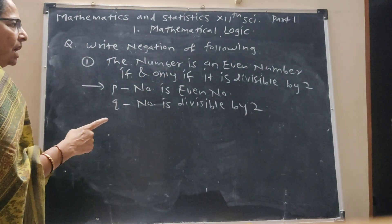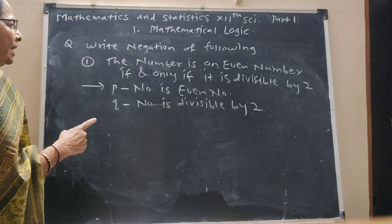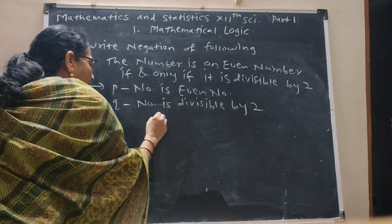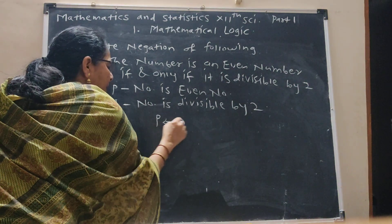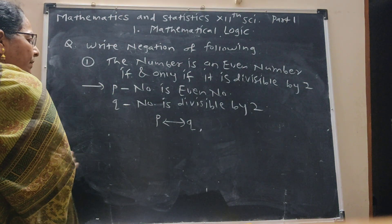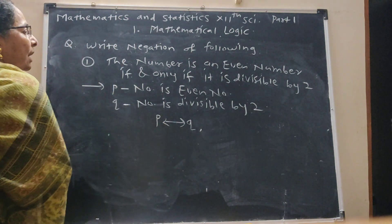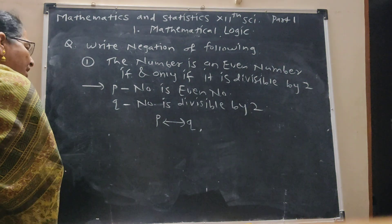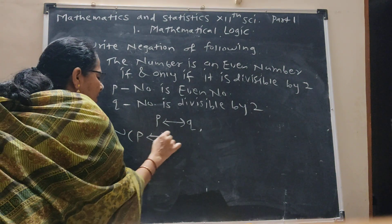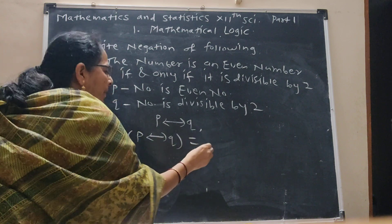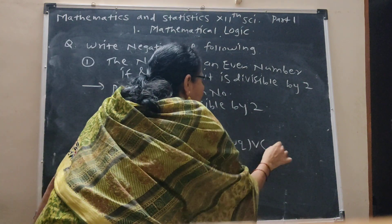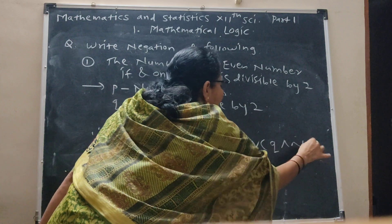These two statements are combined by 'if and only if', so we have P double implication Q. This is the given statement. And we have to write its negation. Therefore, the negation of P ↔ Q is: (P and negation Q) or (Q and negation P).